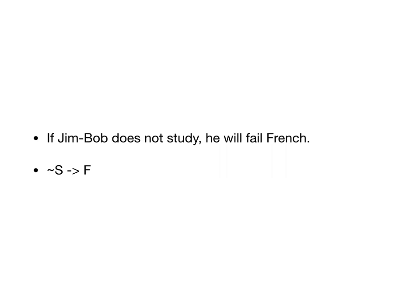If I wanted to be really formal, I would write S equals 'Jim Bob studies' and F equals 'he fails French.' But I think the meaning comes through without that. I'm going to be a little sloppy on these — I don't want to throw a lot of unnecessary verbiage at you. So I'm not going to give you the full key for every variable here.